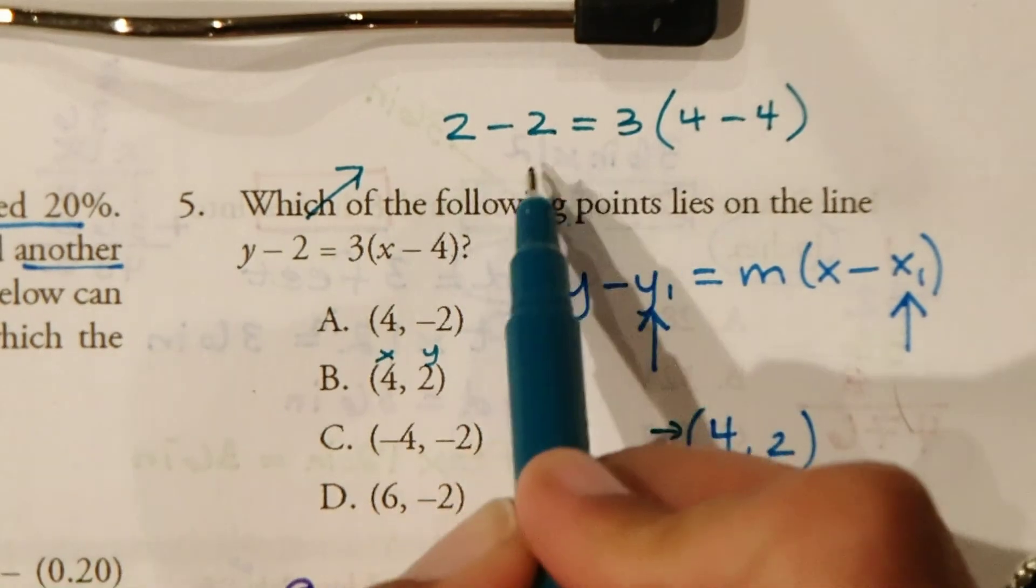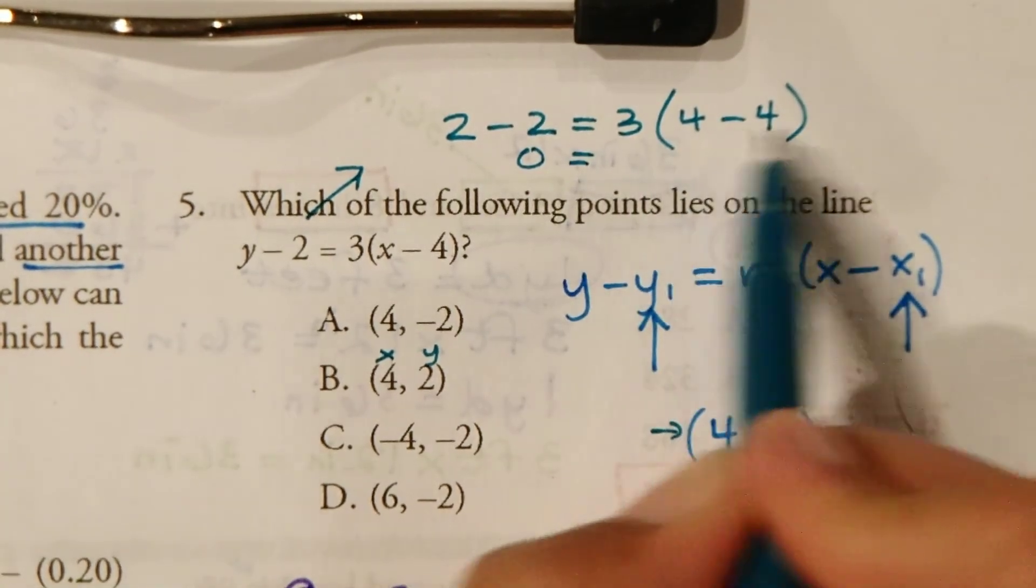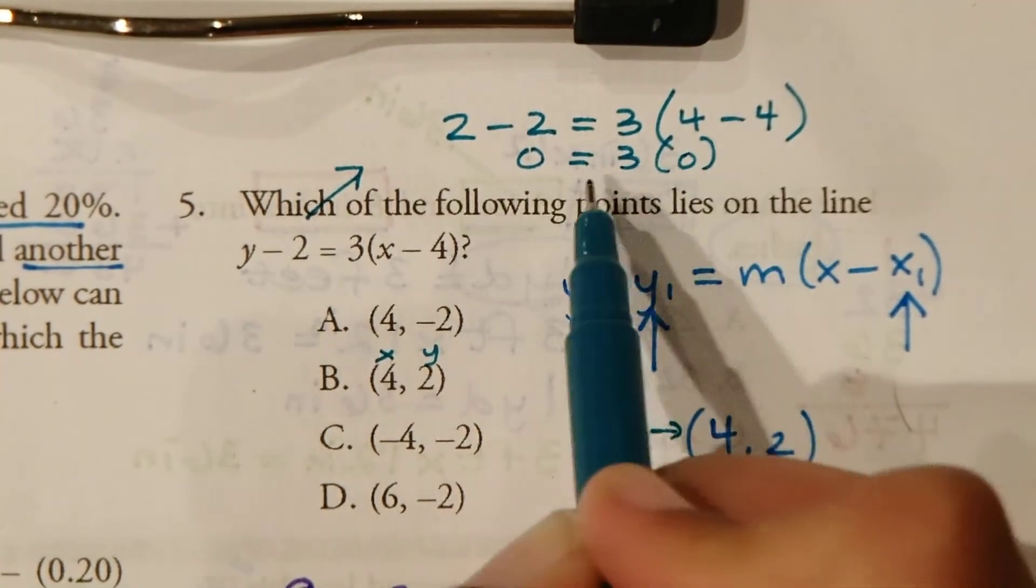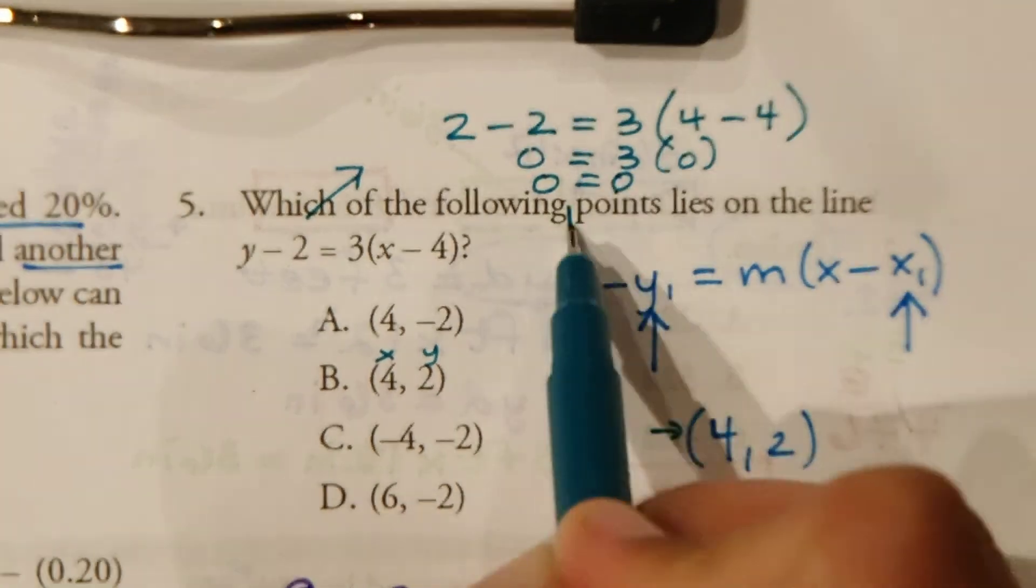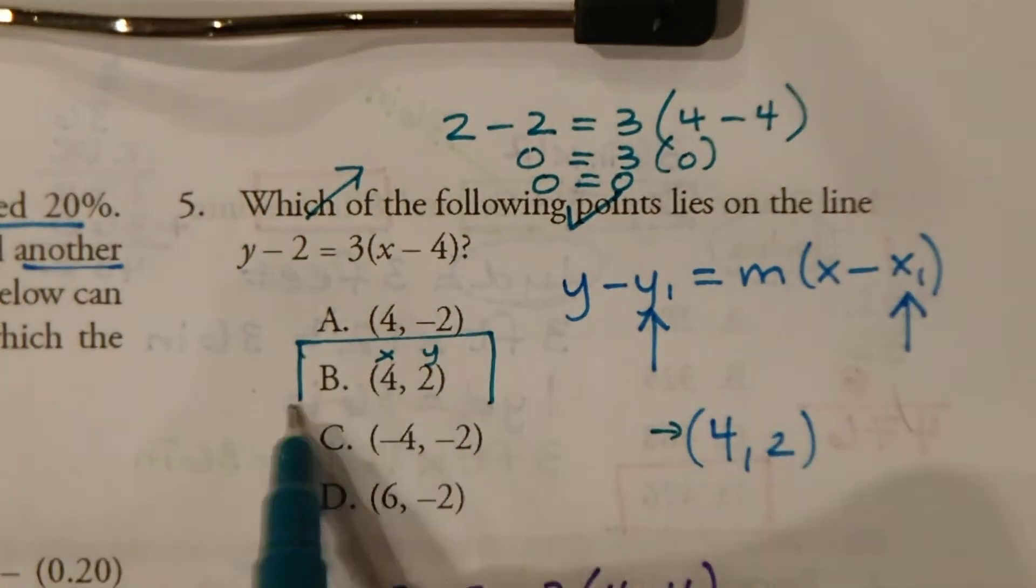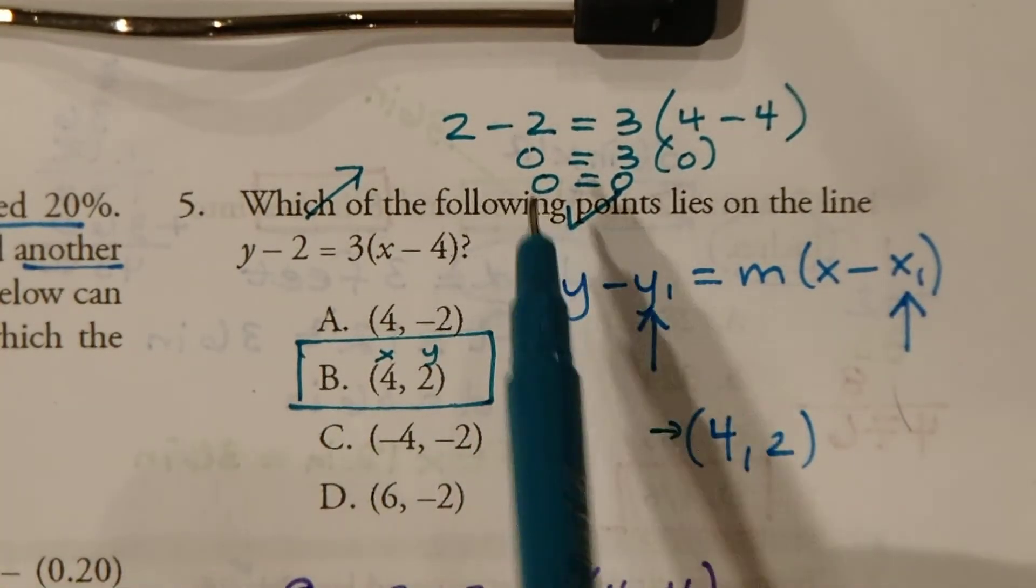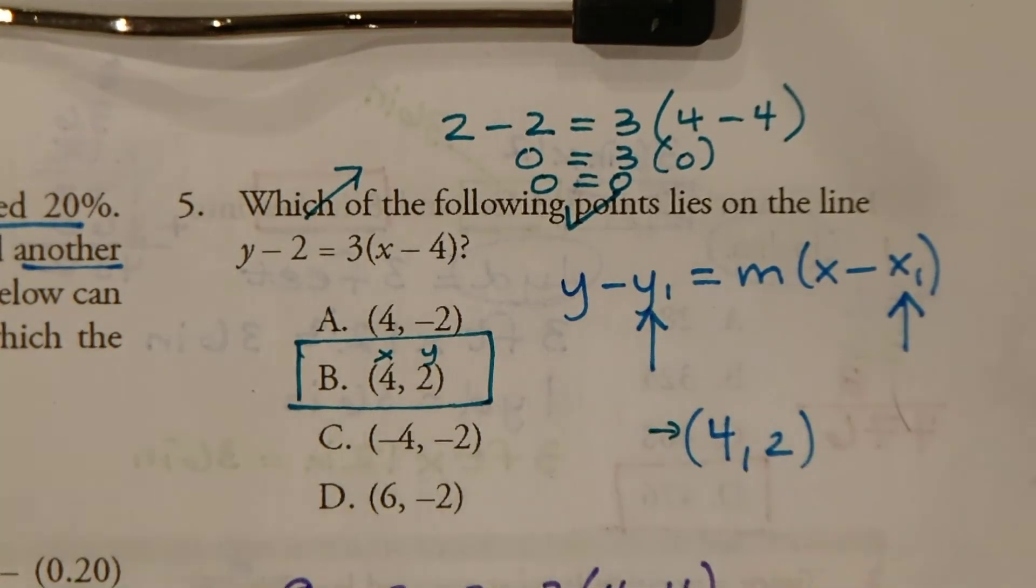So, we solve this. 2 minus 2 is 0. 4 minus 4 is 0. So, 3 times 0. 0 equals 0. Yes. So, I know that this is my correct answer because they're equivalent to each other here.